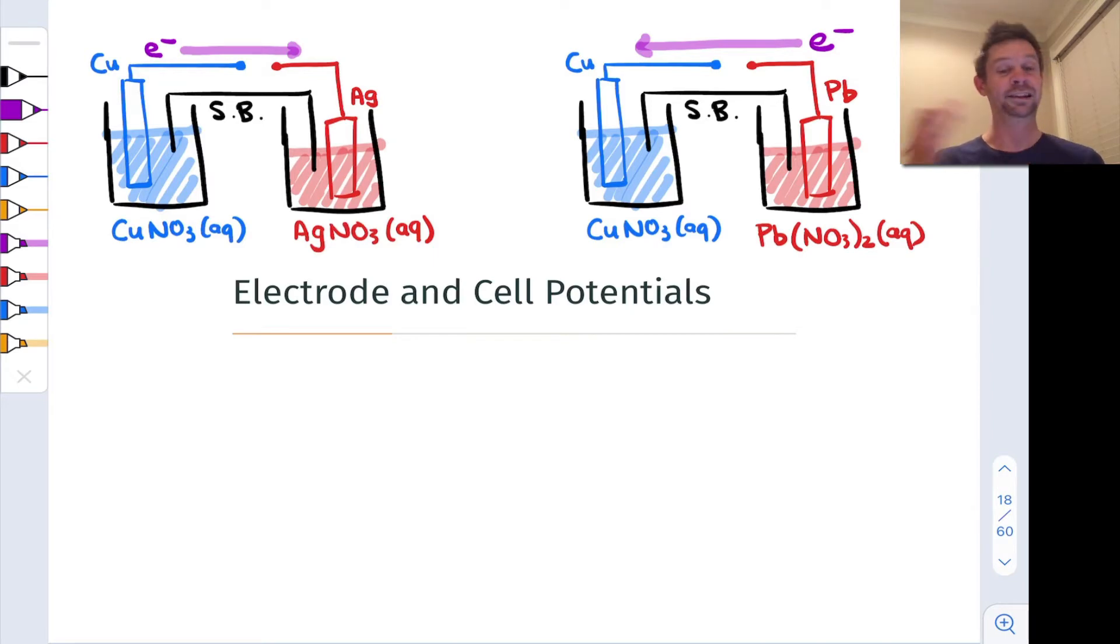So when we connect these two half cells together, electrons want to flow from the lead electrode to the copper electrode, making the lead side the anode and the copper side the cathode. What happens in a particular situation all depends on the identities of these metals and in certain cases as we'll see on the concentrations of the aqueous species.